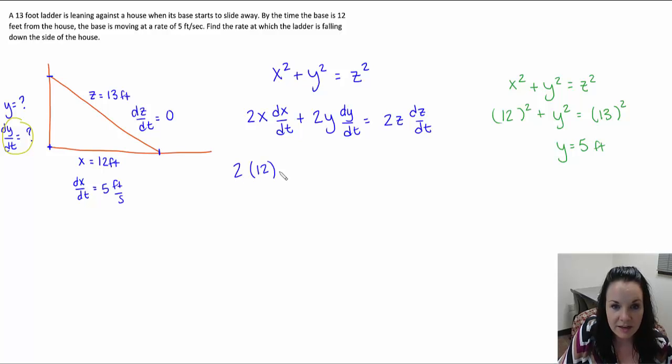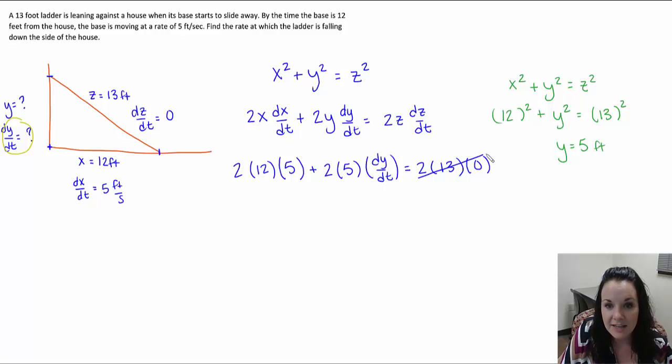All right, so x we said was 12. dx dt is 5. Our y we just solved for is 5. And then our dy dt is actually what we're trying ultimately to figure out. Our z is 13. And then our dz dt is 0. And because that's 0, that cancels out the entire right side.